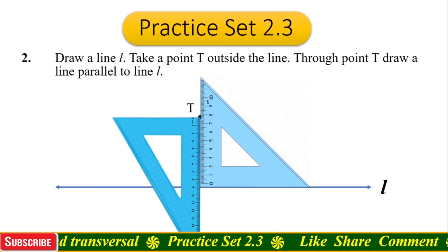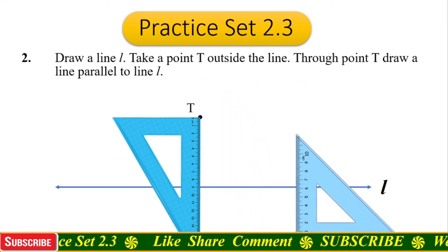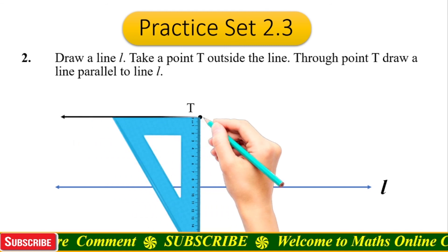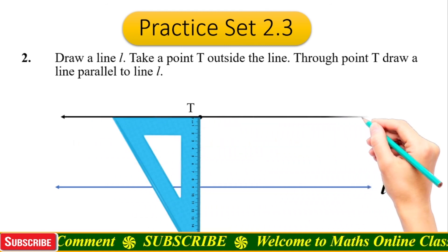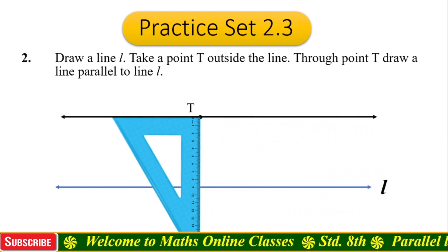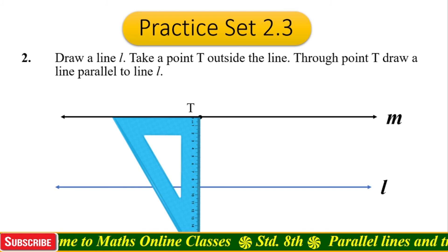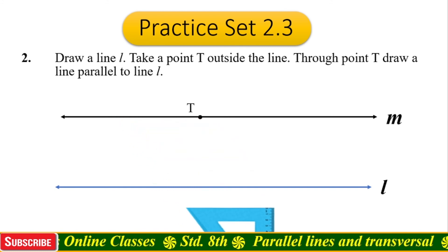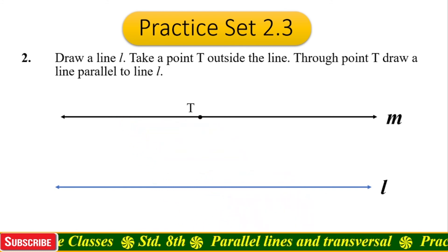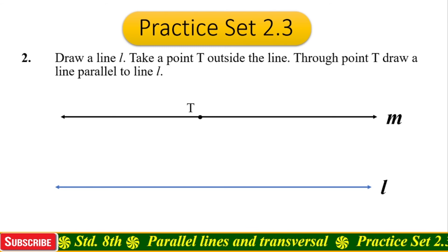Now remove the first set square and draw a line which passes through point T. Name this newly constructed line as line m. Remove the set square — the construction is completed.